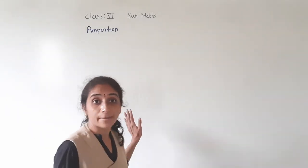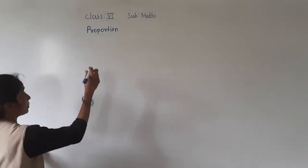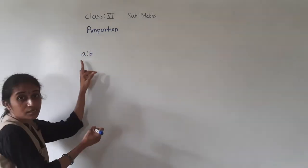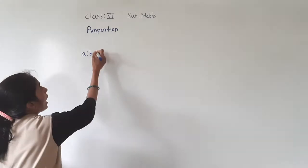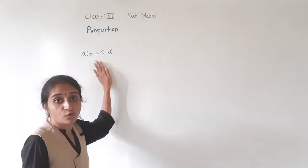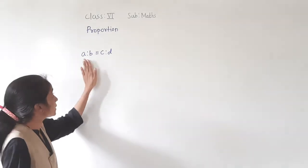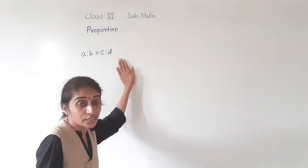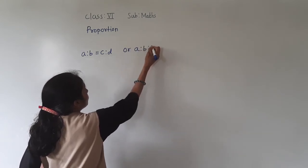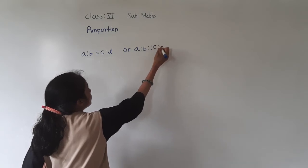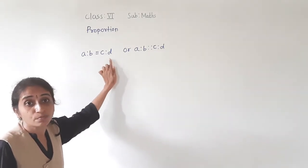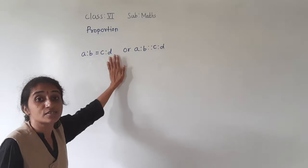The general form of proportion may be written as A is to B as C is to D. So how to read this? A is to B as C is to D.